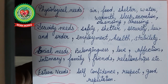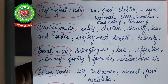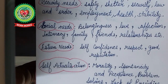Safety needs consist of physical safety against accidents, economic safety, and social security. There is a concern for the future — economic security against unemployment, old age, sickness, and disability. If an individual's safety is in danger, other things seem unimportant. An organization satisfies safety needs of their staff by providing job security, pensions, provident fund, and insurance.